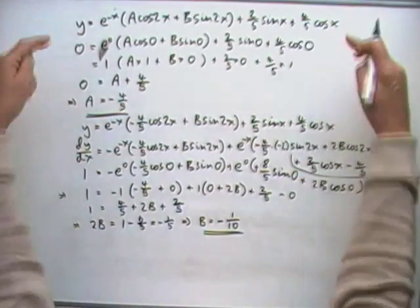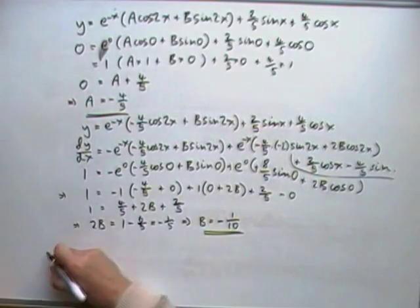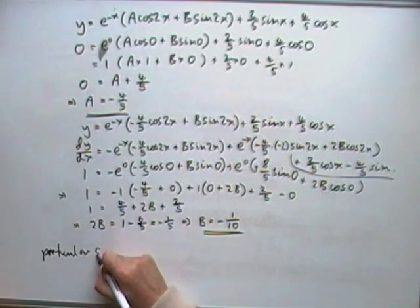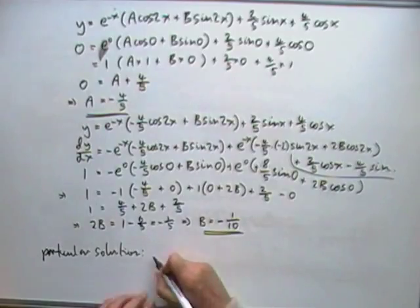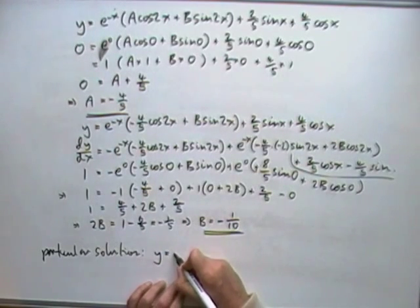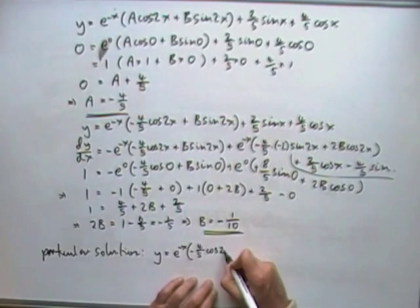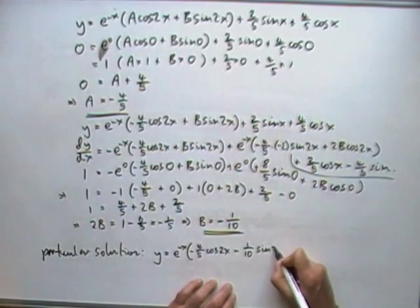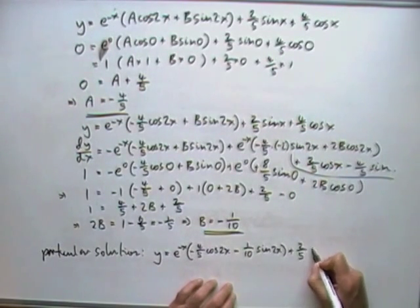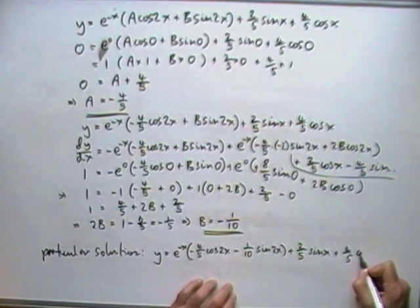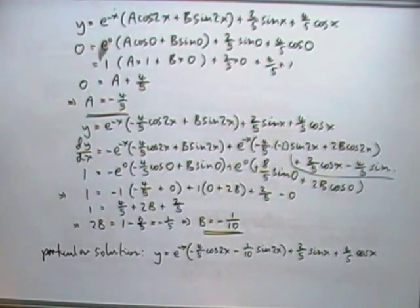Now I know where B is, and I can put that back in to find them both. So, the particular solution then. The particular solution will be putting those numbers back in. I've got e to the negative x, and then putting in the negative 4 fifths for A, and the negative tenths for B. And then, with the other two bits we have to begin with, that's the final answer, in an acceptable form.